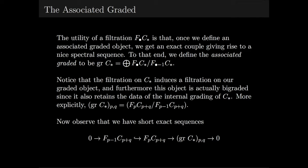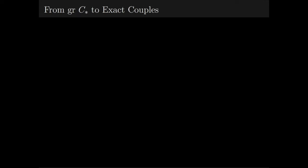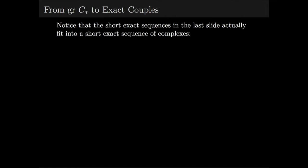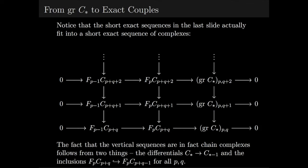Now observe that the work done so far gives us short exact sequences. We can take the short exact sequences in the last slide and actually fit them into a short exact sequence of complexes as follows. The fact that the vertical sequences are in fact chain complexes comes from two things: the differentials from our original chain complex C star, and the inclusions coming from the compatibility of the differential on C star and the filtration.